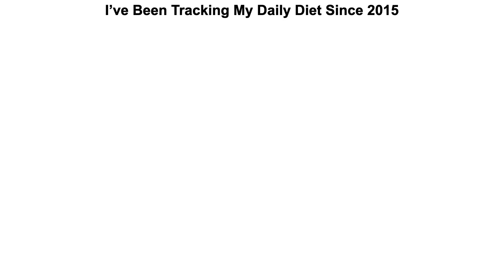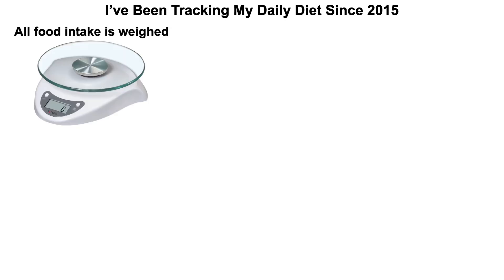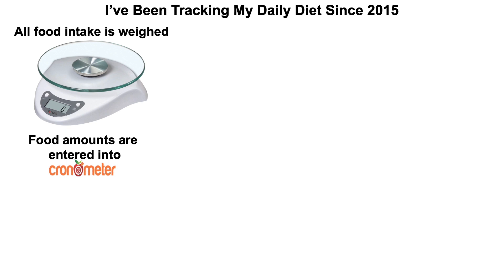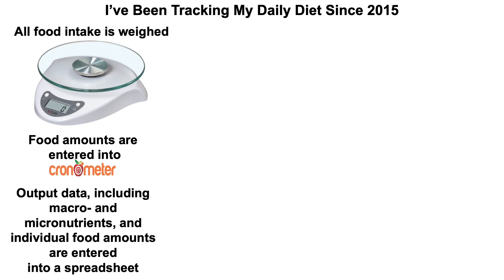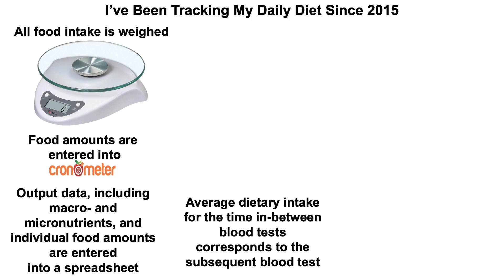To get there, it's important to go through a quick review. I've been tracking my daily diet since 2015 — I've weighed literally all of my food using a food scale. Those food amounts are entered into Cronometer (not sponsored). Any online software like MyFitnessPal would do a similar job. That output data — including macros, micronutrients, and individual food amounts — is entered into a spreadsheet every day, taking about five minutes.